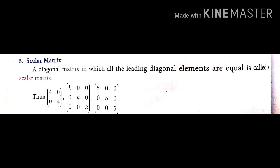The fifth type is scalar matrix — a diagonal matrix in which all the leading diagonal elements are equal. For example, [4, 0; 0, 4], or [k, 0, 0; 0, k, 0; 0, 0, k], or [5, 0, 0; 0, 5, 0; 0, 0, 5]. These are called scalar matrices.